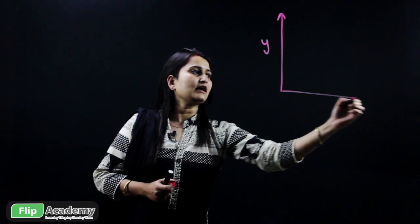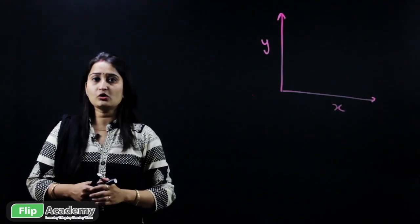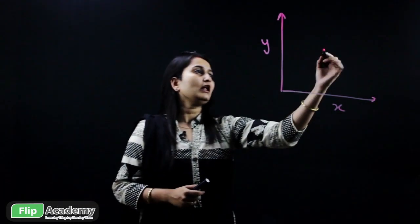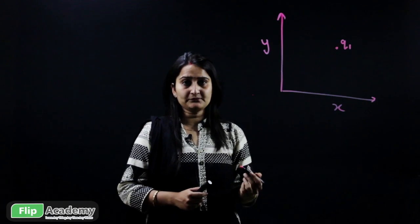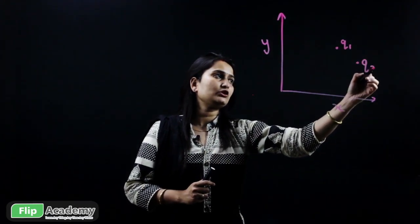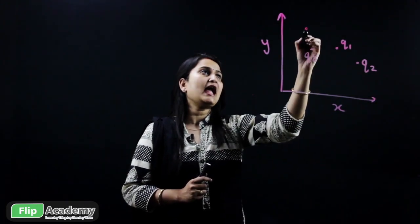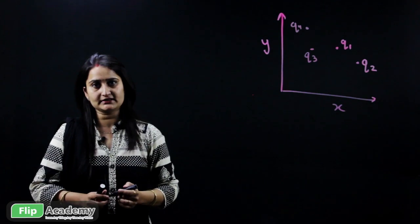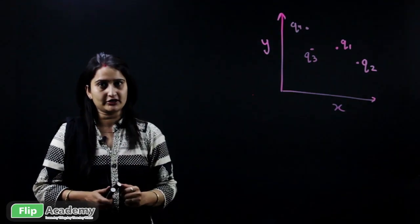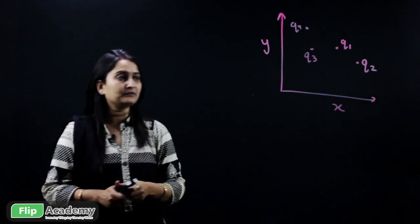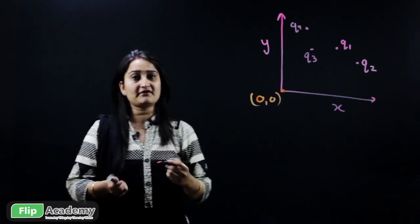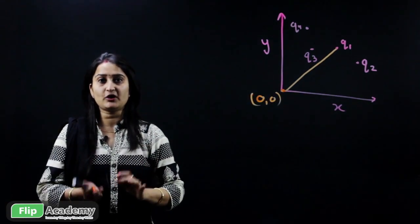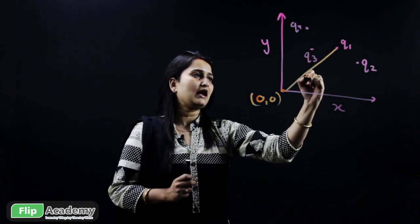To understand it, we draw a diagram with a y-axis and an x-axis. We take four charges placed in the coordinate system. The first charge is q1, the second is q2, the third is q3, and the fourth is q4. They are distributed randomly over the x-y coordinate. The position vector is always found from the origin, which is (0, 0). The position of q1 is taken from the origin and marked as r1.